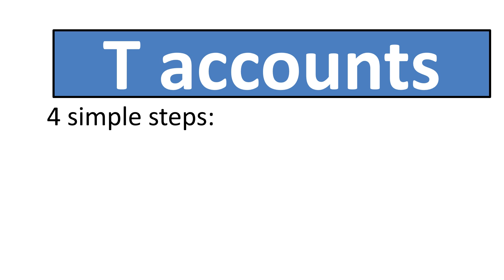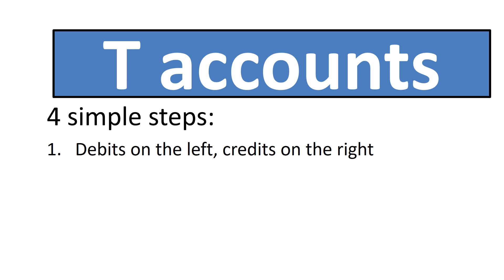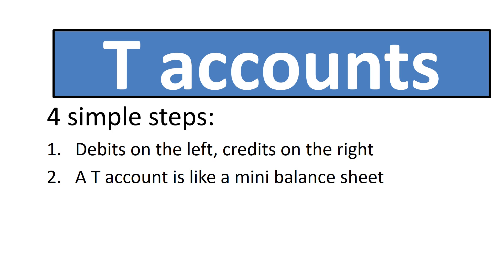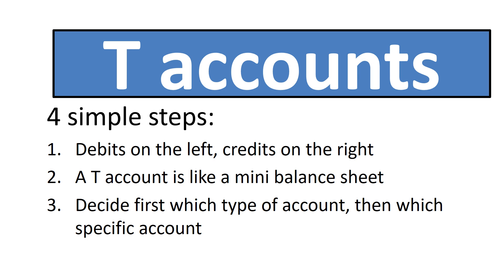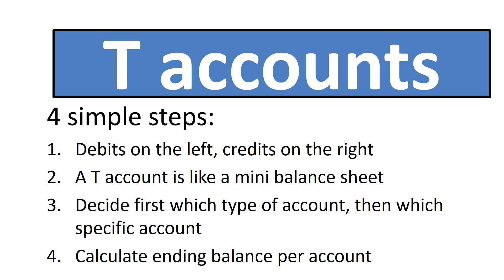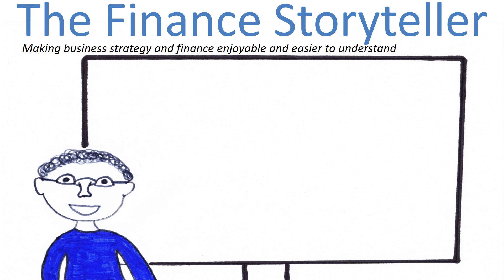T-accounting in 4 steps. Debits on the left, credits on the right. A T-account is like a mini balance sheet for one specific account in the ledger. For every journal entry, decide first which type of account you need, and then which specific account in that category. To calculate the ending balance for an account, add up the opening balance and the debits and credits for the period. Want to learn more about accounting, finance and business? Then subscribe to the Finance Storyteller YouTube channel! Thank you!